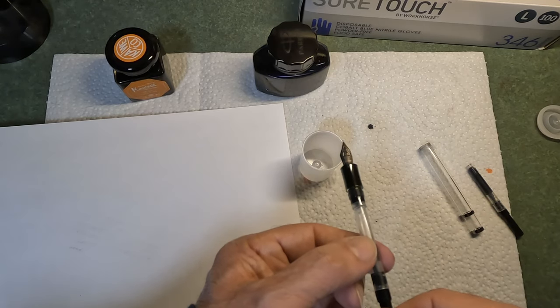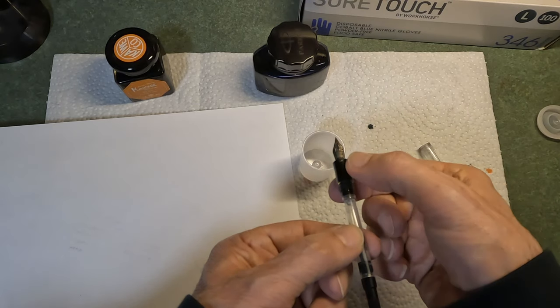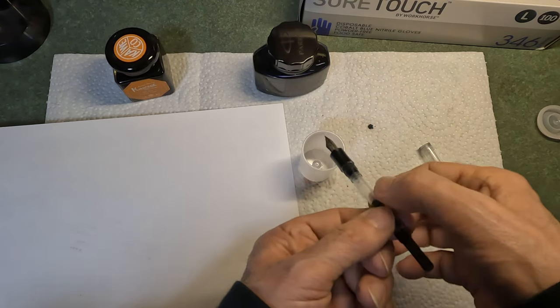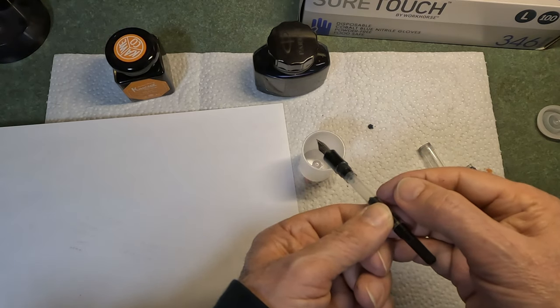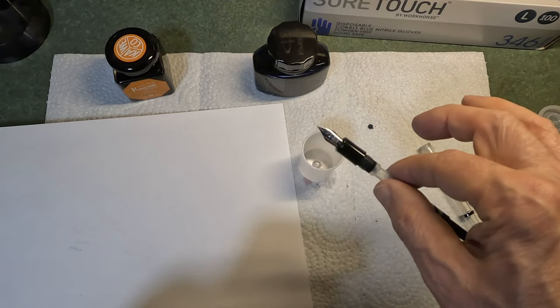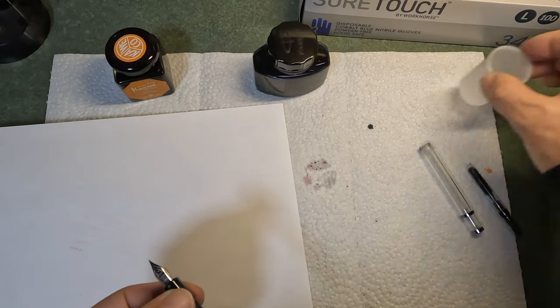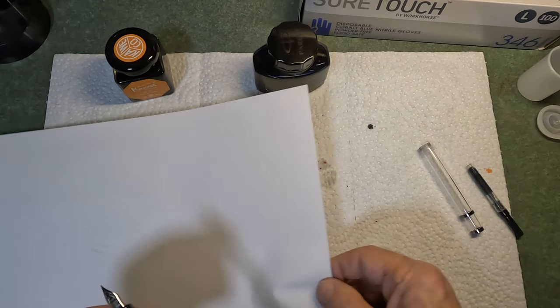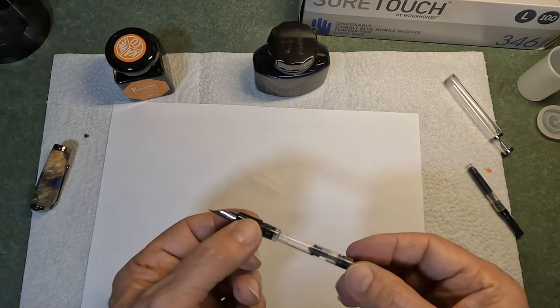And it does take a while. So you want to do that until you get to the point where when you draw water into the converter, that the water is clear. Then you've gotten rid of all traces of ink in your pen. And be prepared, it does take a while. It's quite a chore to clean out the feed section on your pen.